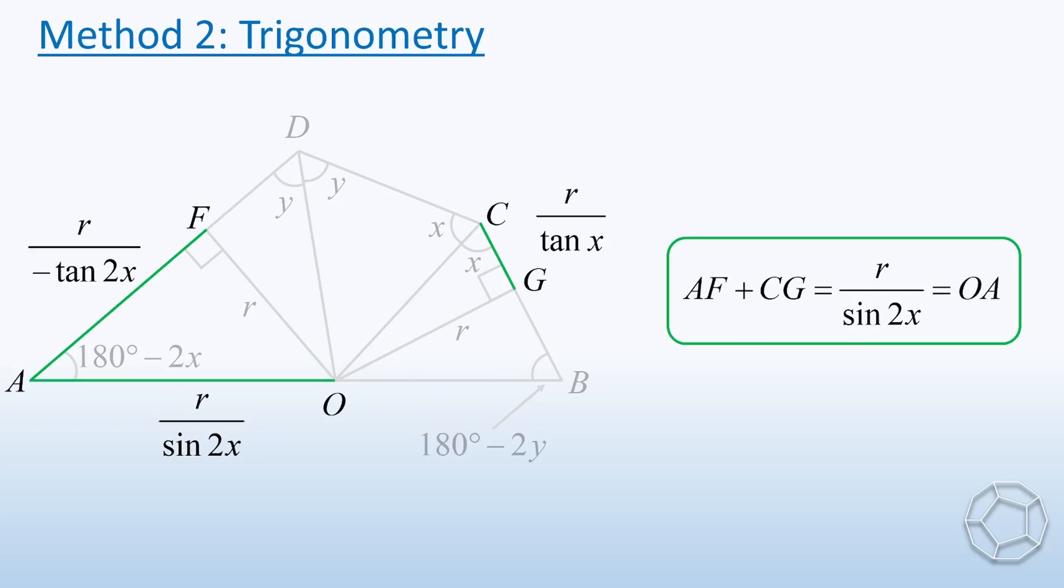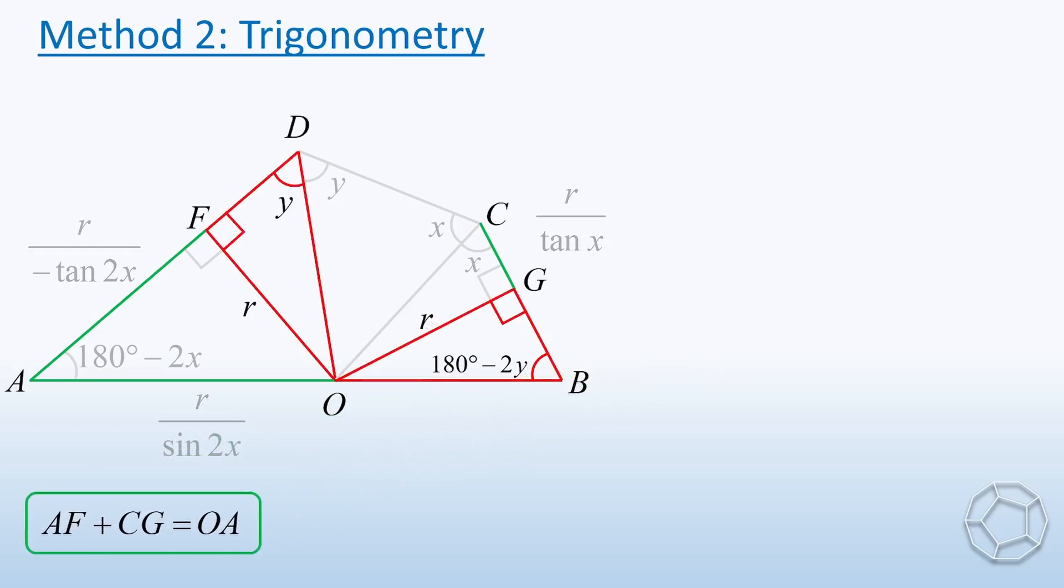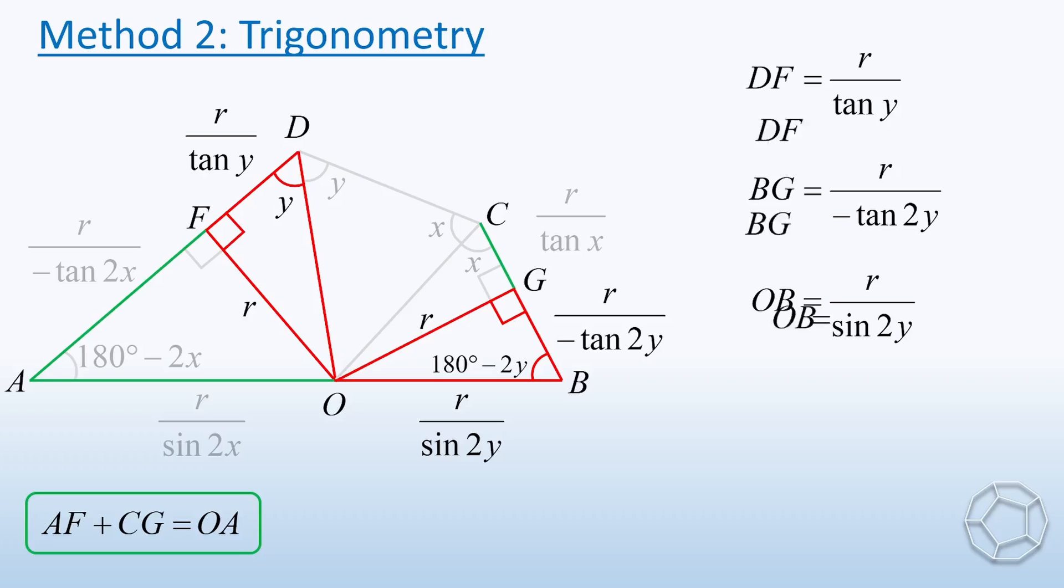Indeed, we can use the same idea for the other sides. Now consider the two red triangles. Here, DF equals R over tan(Y), BG equals R over negative tan(2Y), and OB equals R over sin(2Y). Just change the angle from X to Y. Then everything is the same. Therefore, BG plus DF also equals OB.